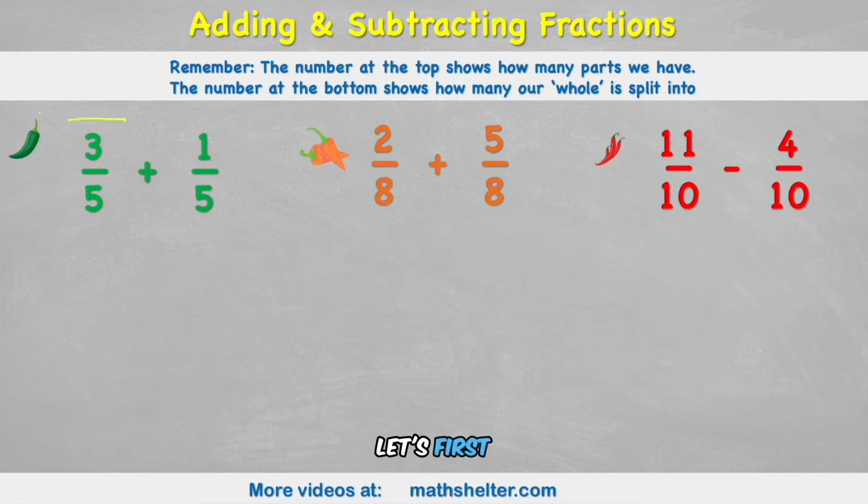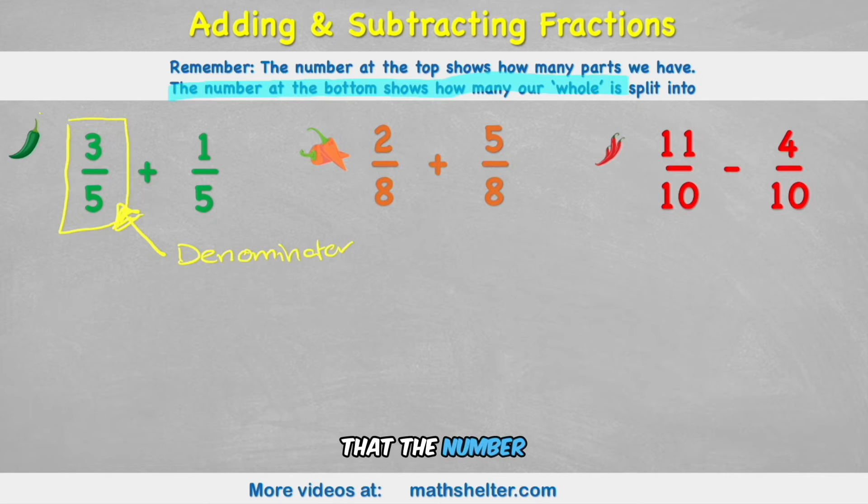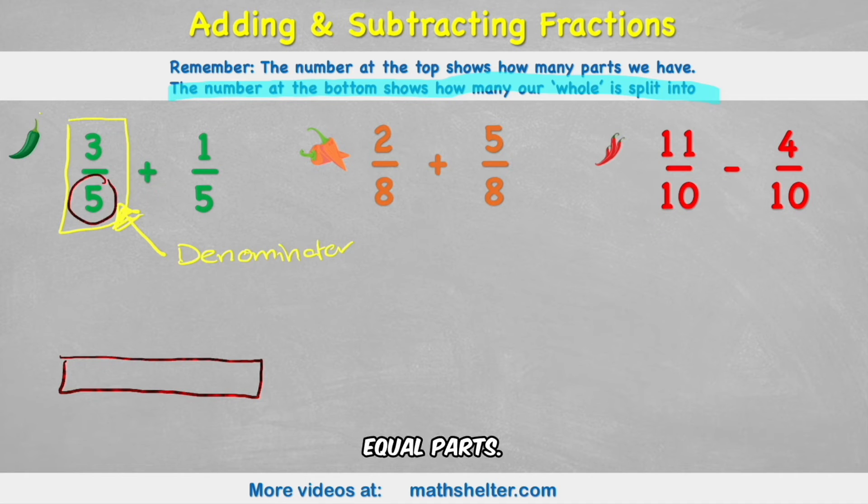So let's start with our green chilli challenge and let's first examine this first fraction, which says 3 over 5, or 3 fifths. So we call this number at the bottom the denominator. And like it said here in our remember, that the number at the bottom shows us how many our whole is split into. So it's like having a whole chocolate bar, but splitting it into 5 equal parts. 1, 2, 3, 4, 5. Just use your imagination a bit to imagine that they're all equal parts.